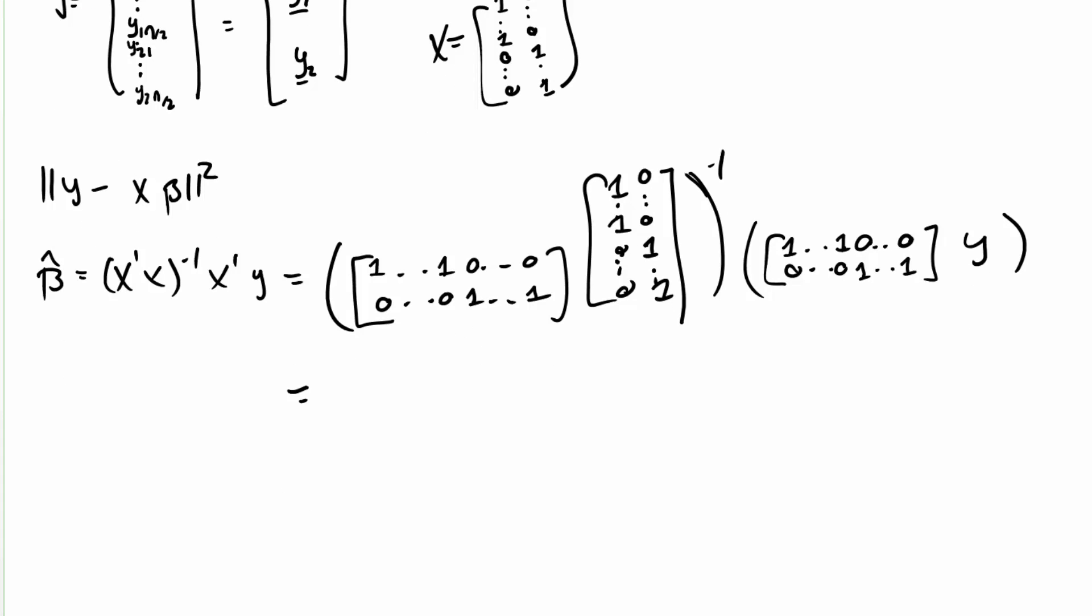So looking at this matrix, this is going to be n over 2 because when I multiply this matrix, this vector times this vector, it's going to just add up the number in that first group.